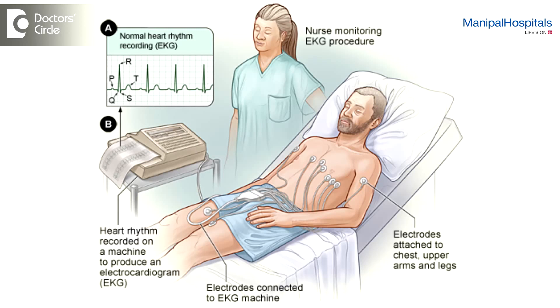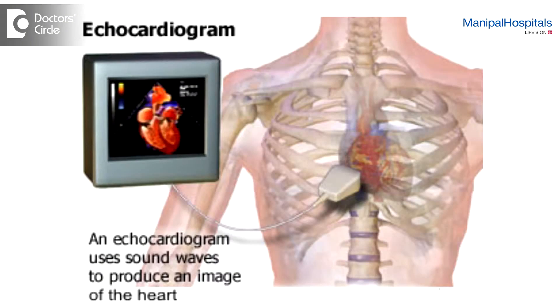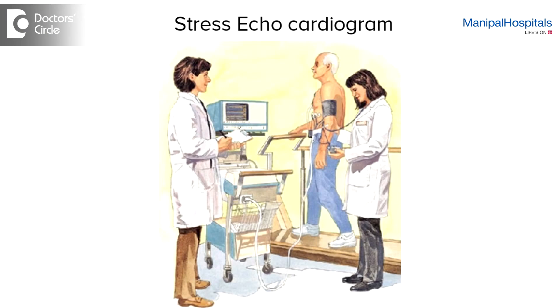The stable ones are usually picked up by doing an ECG. Most of the time, since the symptoms come with exercise, we need the patient to undergo some form of stress test, which could be an exercise treadmill test, a stress echocardiogram, or a stress thallium test.